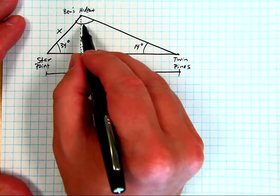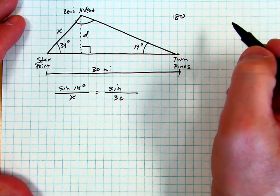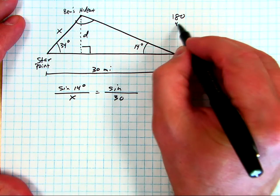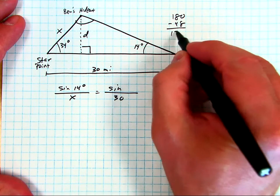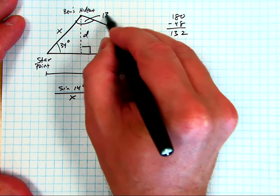Now what is this angle? I can use the triangle sum theorem. I know the three angles have to add up to 180. 34 and 14, that's 48, so subtract that, that's 132. So this angle right here is 132 degrees.